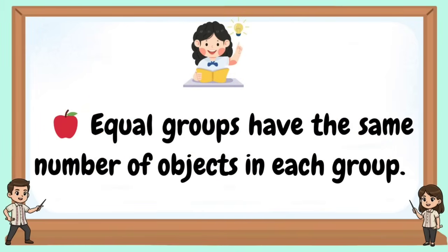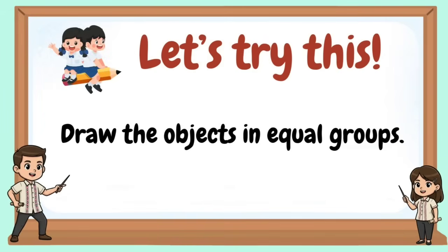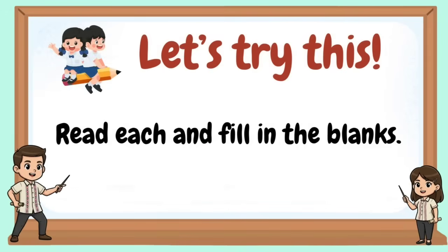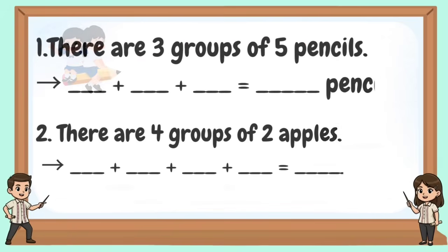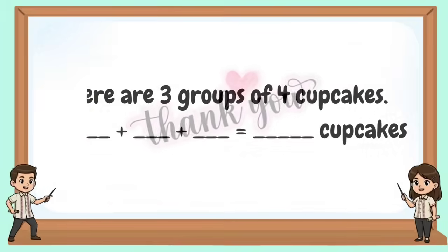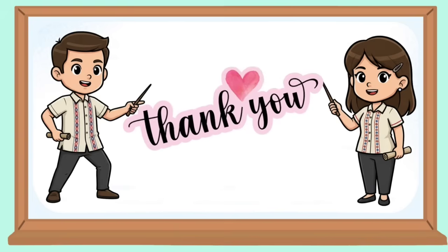Equal groups have the same number of objects in each group. Repeated addition helps us find the total in equal groups. Let's try this — draw the objects in equal groups. Read each and fill in the blanks. Thank you for watching! Till our next mathematics lesson. Goodbye!